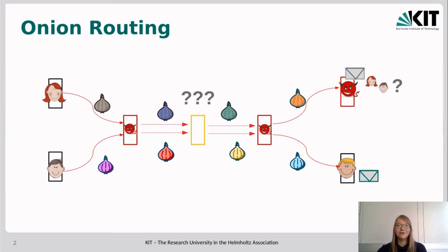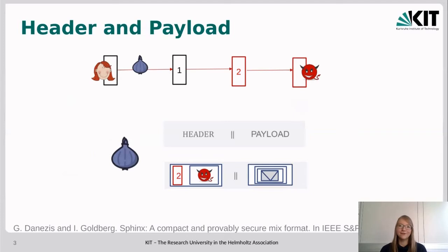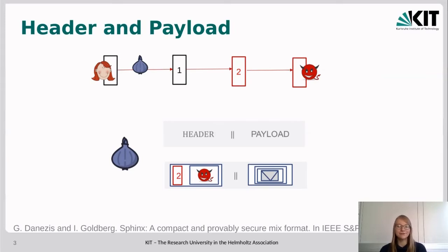Let us look at how onion routing packet formats typically look. They typically consist of a header and a payload. The header contains the routing information as well as key material for the relays, but it is encrypted in multiple layers in a clever way such that each relay only learns the information absolutely necessary for its one step of the path. The payload, on the other hand, is onion-encrypted such that the first layer is for the first relay, the second layer for the second relay, and so on.